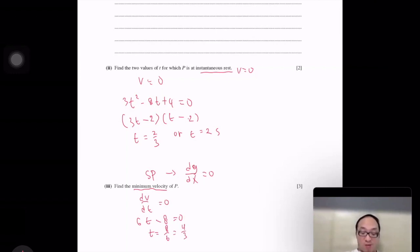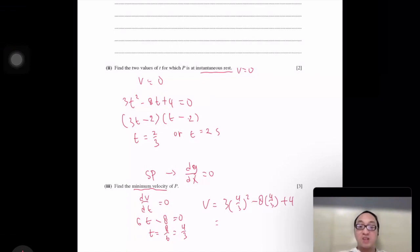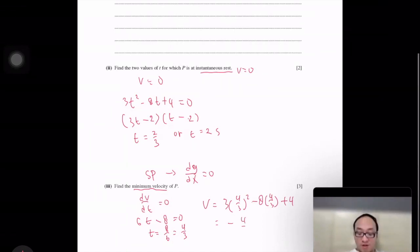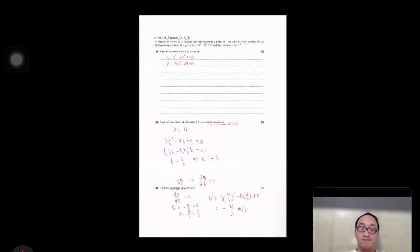And then we put the value to the equation of v. So v is 3 times 4 over 3 squared minus 8 times 4 over 3 plus 4. So the result is equals to negative 4 over 3 meter per second. That's number 8.